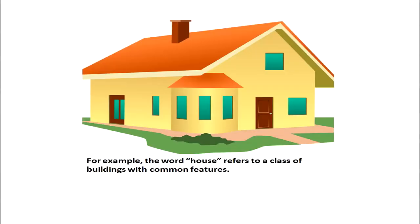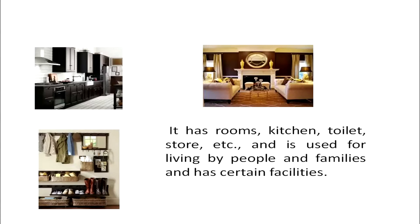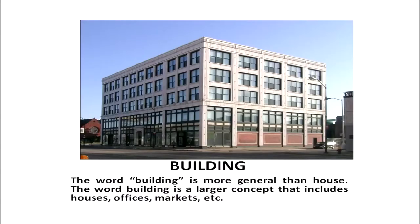Concepts do not refer to a single object. For example, the word 'house' refers to a class of buildings with common features — it has rooms, kitchen, toilet, store, etc., and is used for living by people and families. Similarly, the word 'building' is more general than 'house.' A building can have houses, offices, a market, etc. That means the word 'building' is a more general word as compared to the word 'house.'